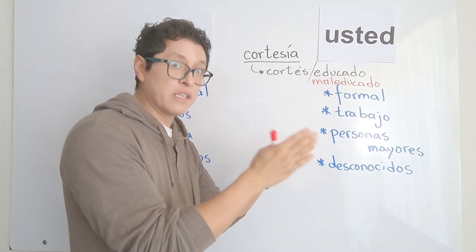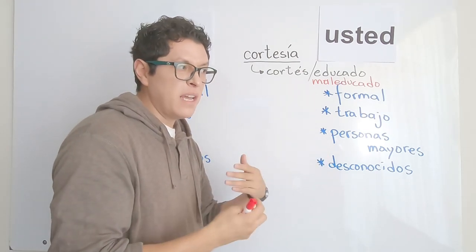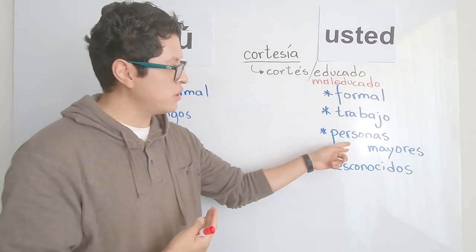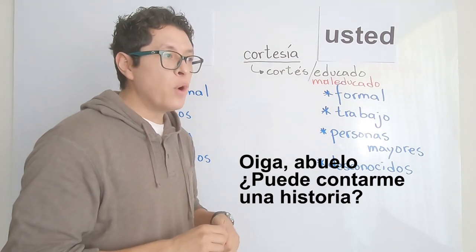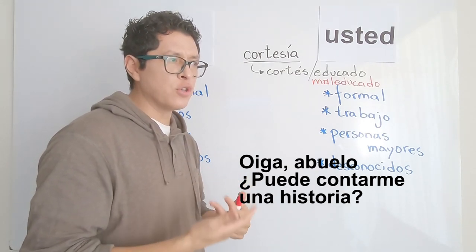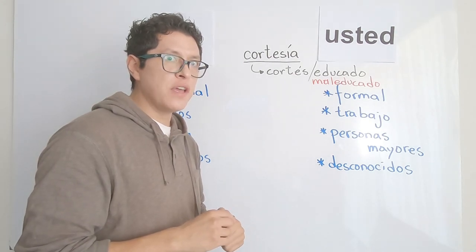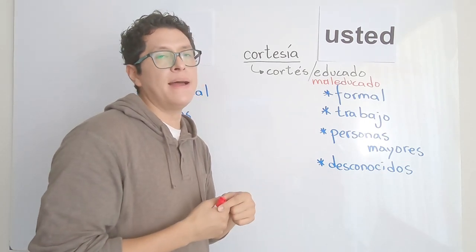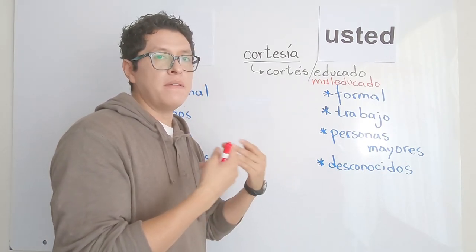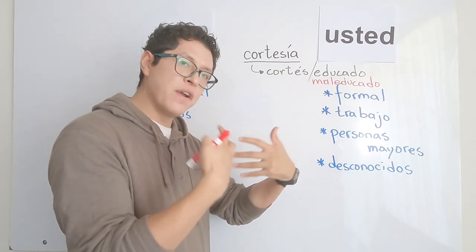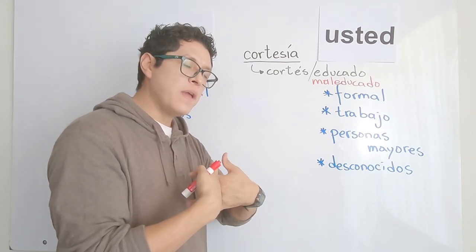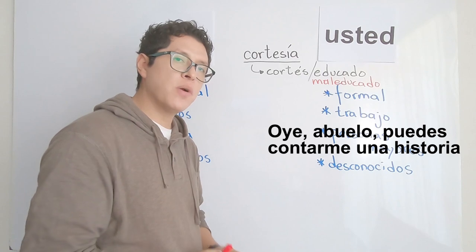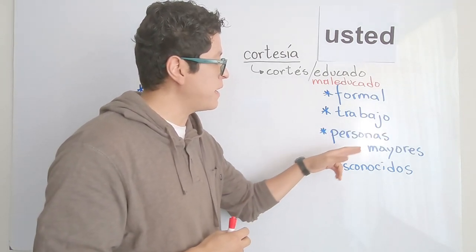When talking to personas mayores, even grandparents, it depends on how respectful you want to be. You might say 'oiga, abuelo, ¿puede contarme una historia?' — using oiga, the imperative for usted. But if you and your grandpa are very close, you might say 'oye, abuelo, ¿puedes contarme una historia?' — using oye, the tú form. It depends on your level of closeness.